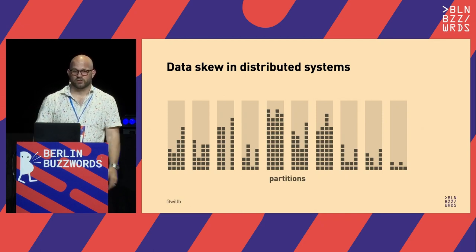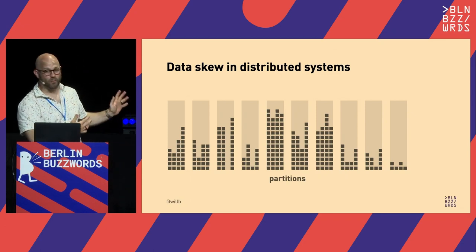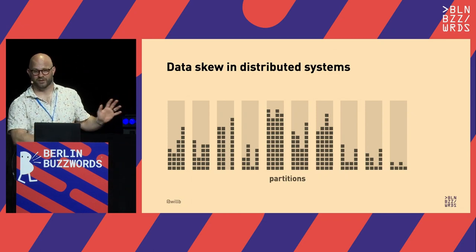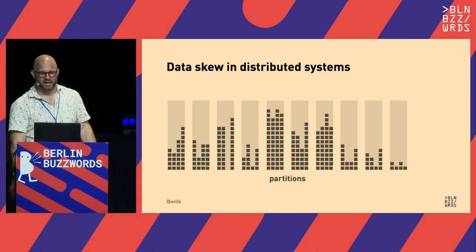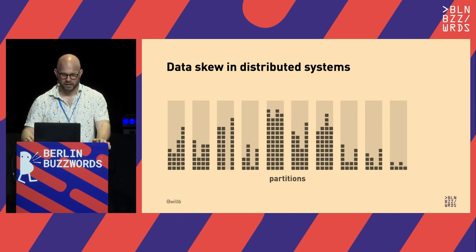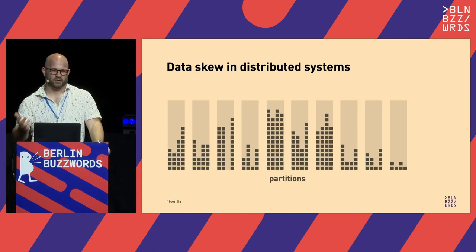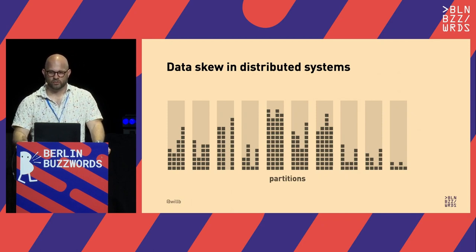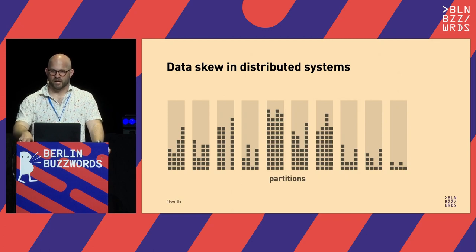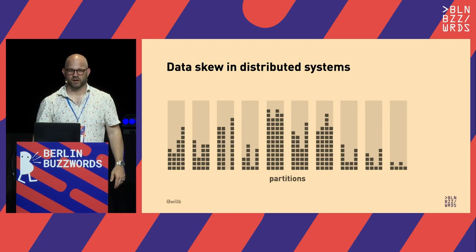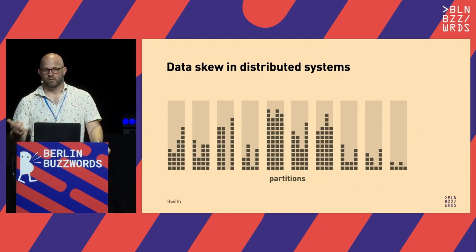But in real-world systems, data skew is often a lot worse than this. All of these pictures fit on a slide without using a log scale. If you think about a social network — if you want to track everyone's interaction with a social media post, keyed by user and by time, and you want the latest for each user with a query —